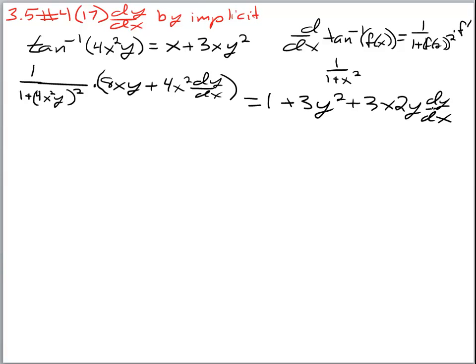Take it slow and step by step. Remember: if we are trying to solve for dy/dx, we have two of them and we need to isolate our variable. We can't isolate the dy/dx that is stuck inside the parenthesis — we can't separate it from the other piece. So the only way to do that is to get rid of those parentheses by doing the distribution.